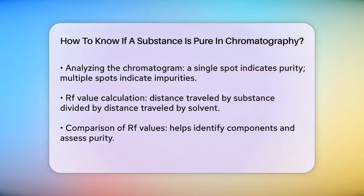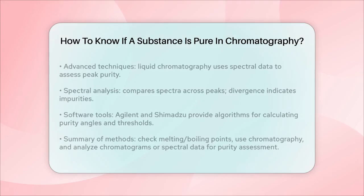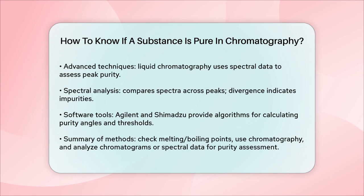In more advanced chromatography techniques, like liquid chromatography, peak purity is assessed using spectral data. The purity of a peak is determined by comparing the spectra across the peak to ensure they are similar. If the spectra diverge, it indicates the presence of impurities. Software tools like those from Agilent and Shimadzu use algorithms to calculate purity angles and thresholds to determine if a peak is spectrally pure.